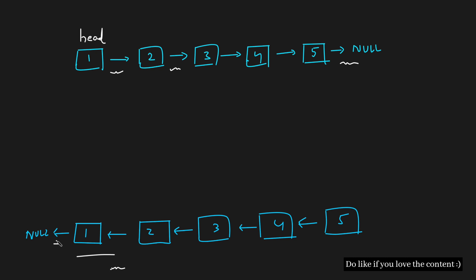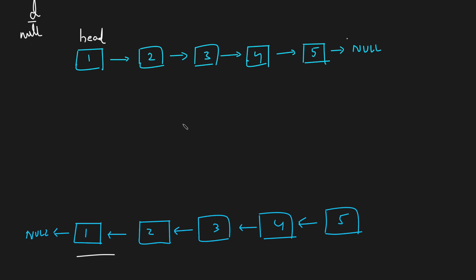If you carefully observe, the only change we are doing is reversing the arrows — the arrows currently point rightward, and in the result they point leftward. Also, the last element now points to null instead of the first. To solve this, we create a dummy node assigned to null. On the first iteration, we create a next node and point it to the immediate next node of the head, which is 2.